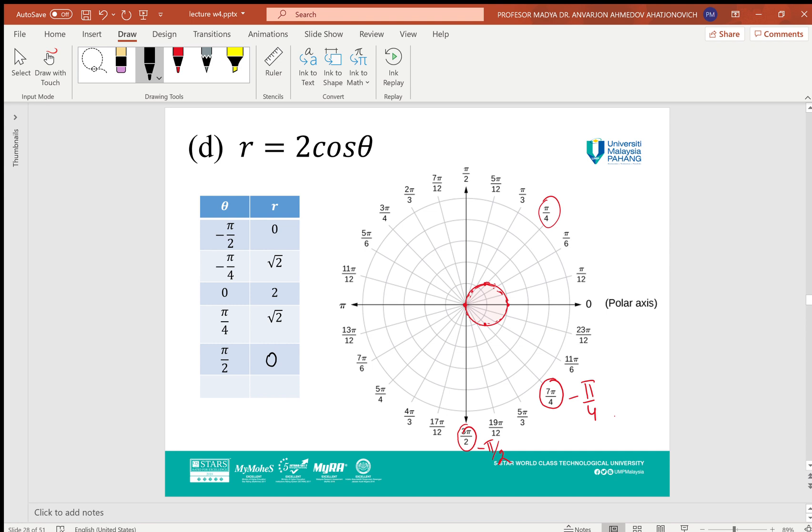r = 2cosθ can be constructed similarly, but here when we consider cosine, we need a symmetric interval. You can see here, from -π/2 to π/2. Because it is an even function, we use a symmetric interval for cosine.